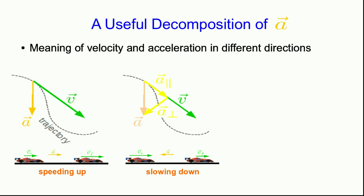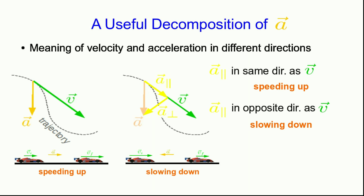The parallel component is responsible for the object speeding up or slowing down. And it's the perpendicular component that's responsible for the object changing its direction of motion. So in our case, that perpendicular component is the component of the acceleration that points straight to the middle of the circle.